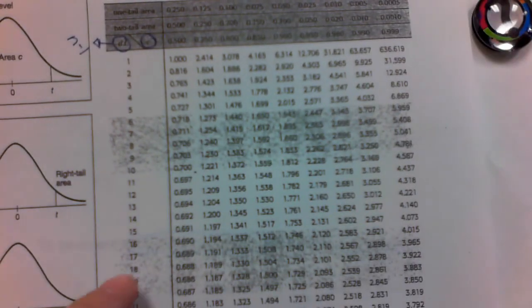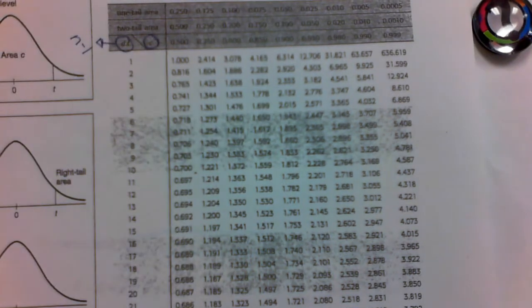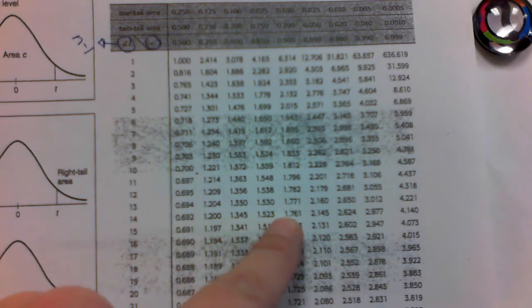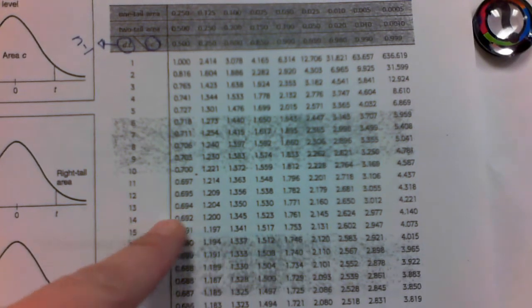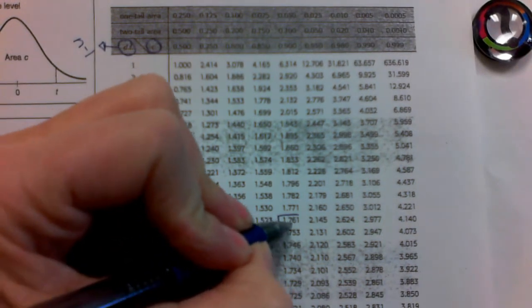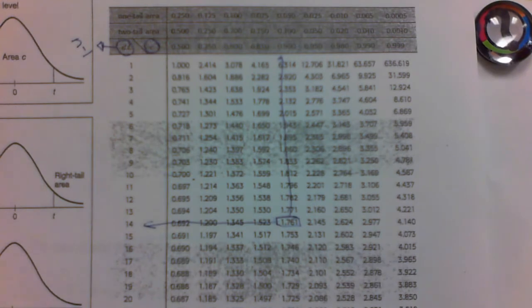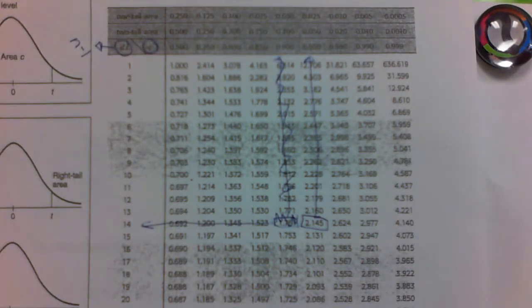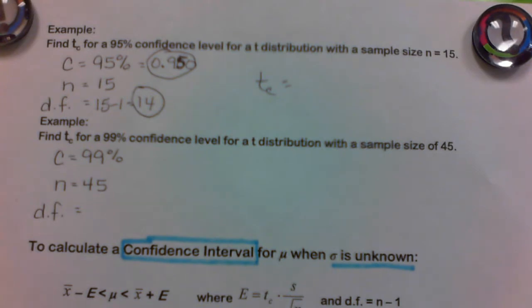Going to the Student's T distribution table, I find DF of 14 and confidence level 0.950, which is the 6th column. Going across row 14 to that column gives us 2.145. So T sub C equals 2.145.